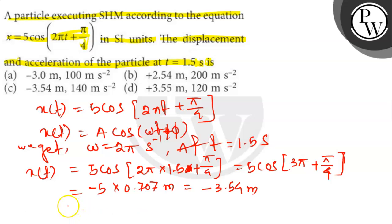Acceleration. Here the acceleration is a equals to minus omega square into displacement. So, here it is minus 2 pi per second full square into minus 3.54 meter.